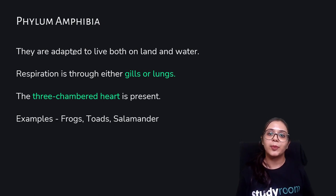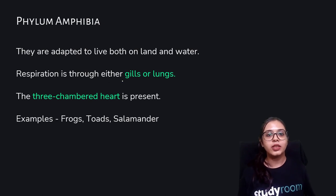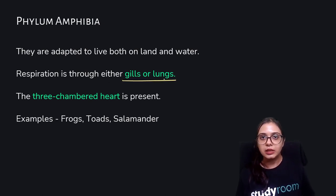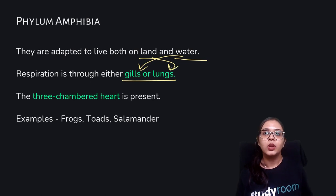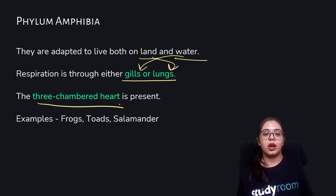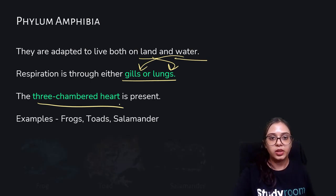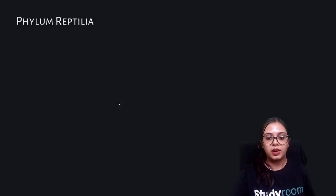Amphibia are adapted to live both on land and in water. Respiration is through gills in aquatic forms and through lungs in land-dwelling forms. They have a three-chambered heart. Examples: frogs, toads, and salamanders.